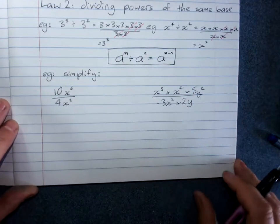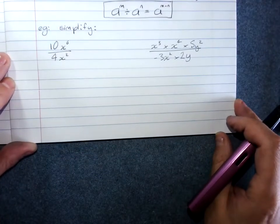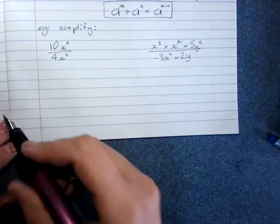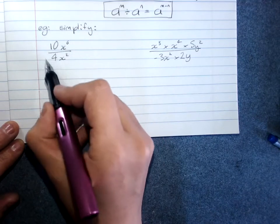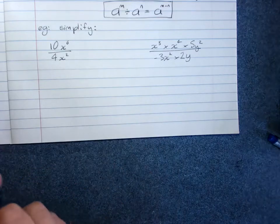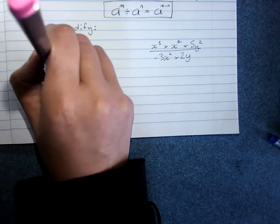Now we can get some pretty tricky questions with these. And in fact you'll see in the second one I've combined law 1 multiplying and law 2 dividing. Simplifying here, deal with coefficients separately. So we cancel common factors. 2 goes into both of these leaving me with 5 over 2.